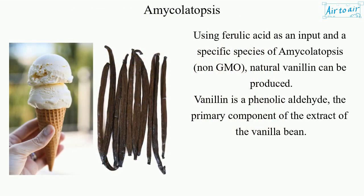Using ferulic acid as an input and a specific species of Amycolatopsis, non-GMO natural vanillin can be produced. Vanillin is a phenolic aldehyde, the primary component of the extract of the vanilla bean.